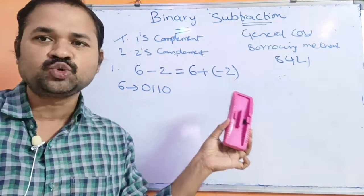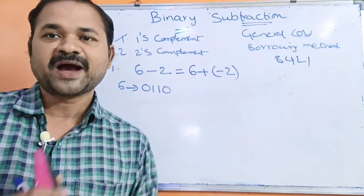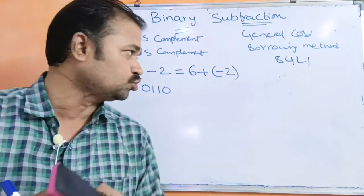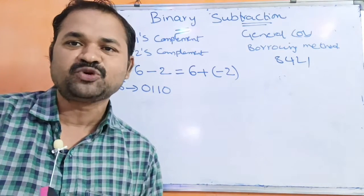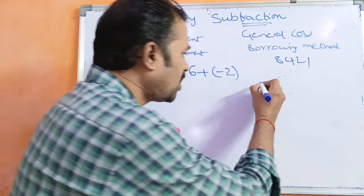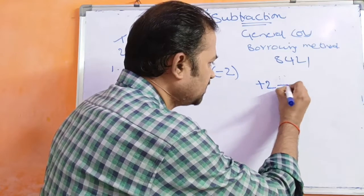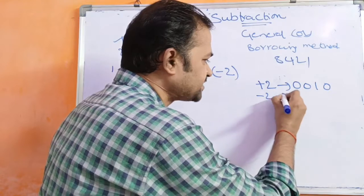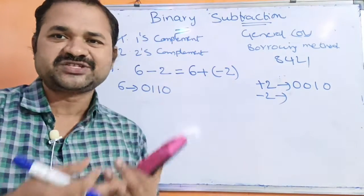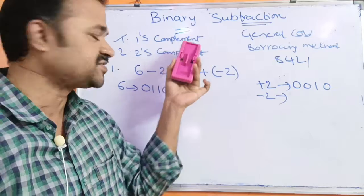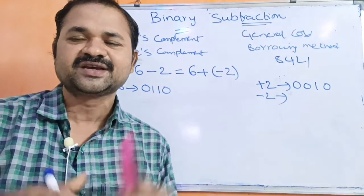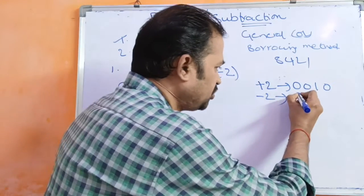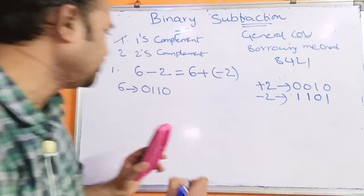Next, we have to represent minus 2 in one's complement. In order to represent minus 2, first we represent plus 2. Plus 2 is 0, 0, 1, 0. Then for minus 2 in one's complement — zeros are converted to ones, ones are converted to zeros — so 0, 0, 1, 0 becomes 1, 1, 0, 1.